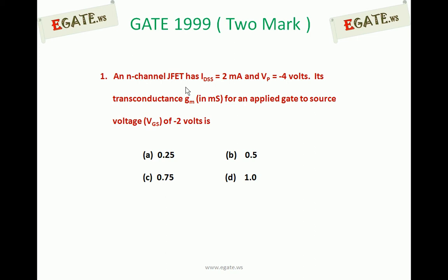IDSS is nothing but drain-to-source saturation current and VP is nothing but pinch-off voltage. Both are given and for a given VGS of minus 2 volts, what will be the transconductance?